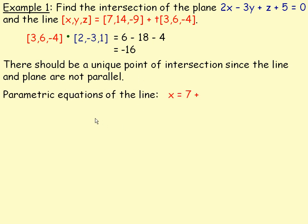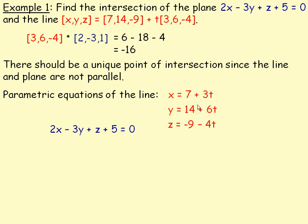We'll find the parametric equations for the line: x equals 7 plus 3t, y equals 14 plus 6t, and z equals negative 9 minus 4t. Our goal is to find what value of t gives a point on the line that's also on the plane. We take the scalar equation of the plane and substitute 7 plus 3t for x, 14 plus 6t for y, and negative 9 minus 4t for z — giving us an equation with just one variable, t.